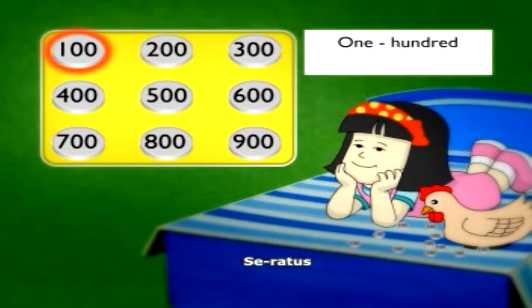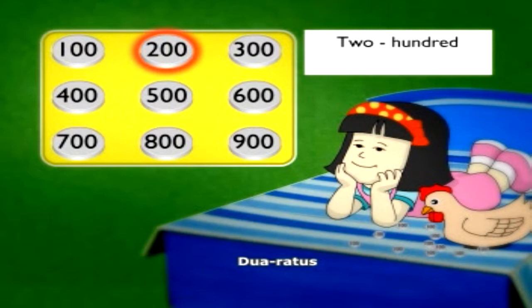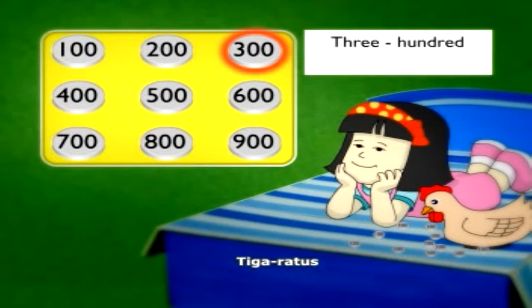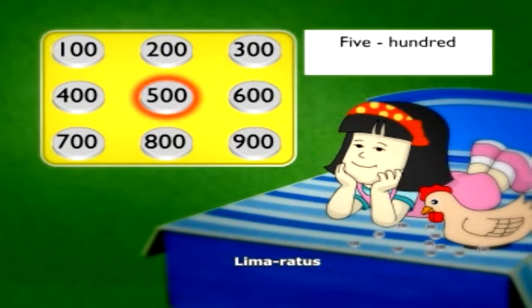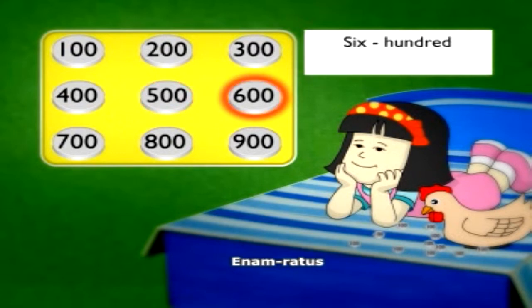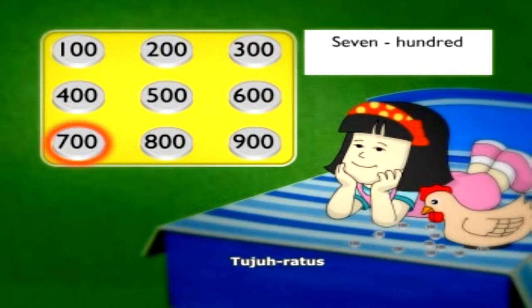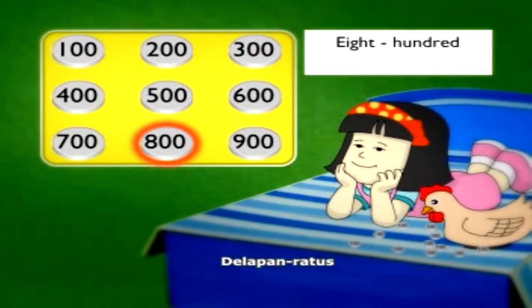100, 200, 300, 400, 500, 600, 700, 800, 900.